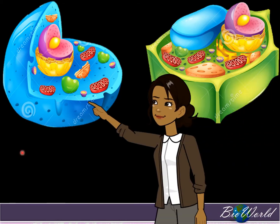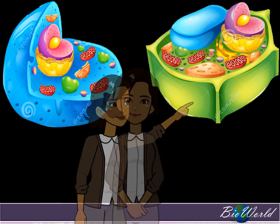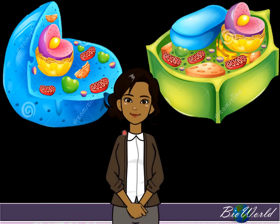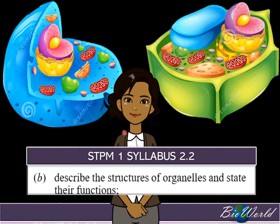Can you see these tiny little structures found in the animal cell which are also found in the plant cell? Well, these are what we call organelles. In today's bio world, we're going to cover syllabus 2.2b — that is to describe some of the structures of organelles and state their functions.